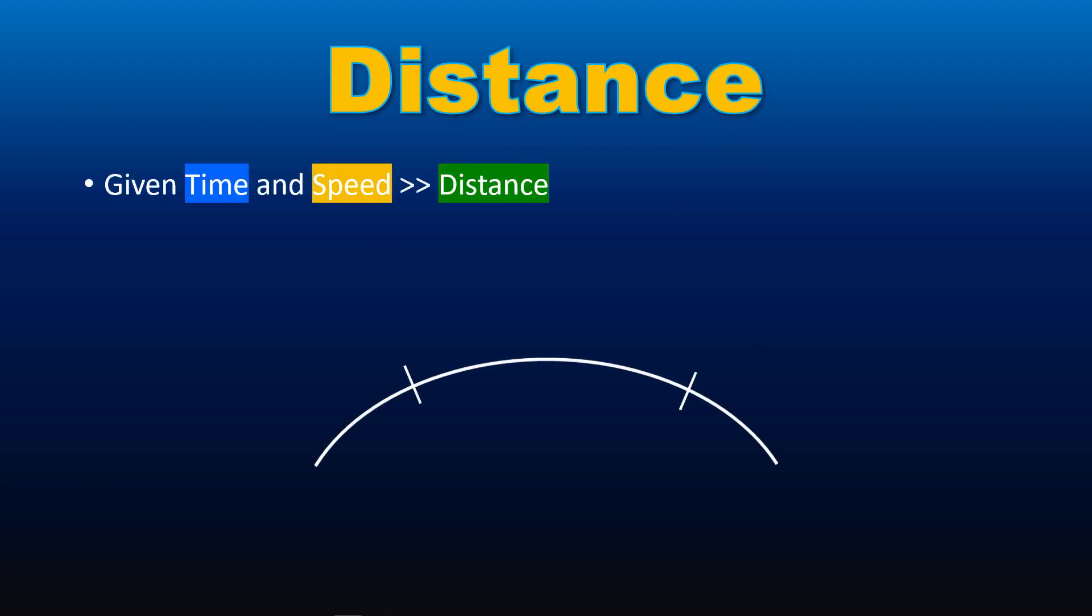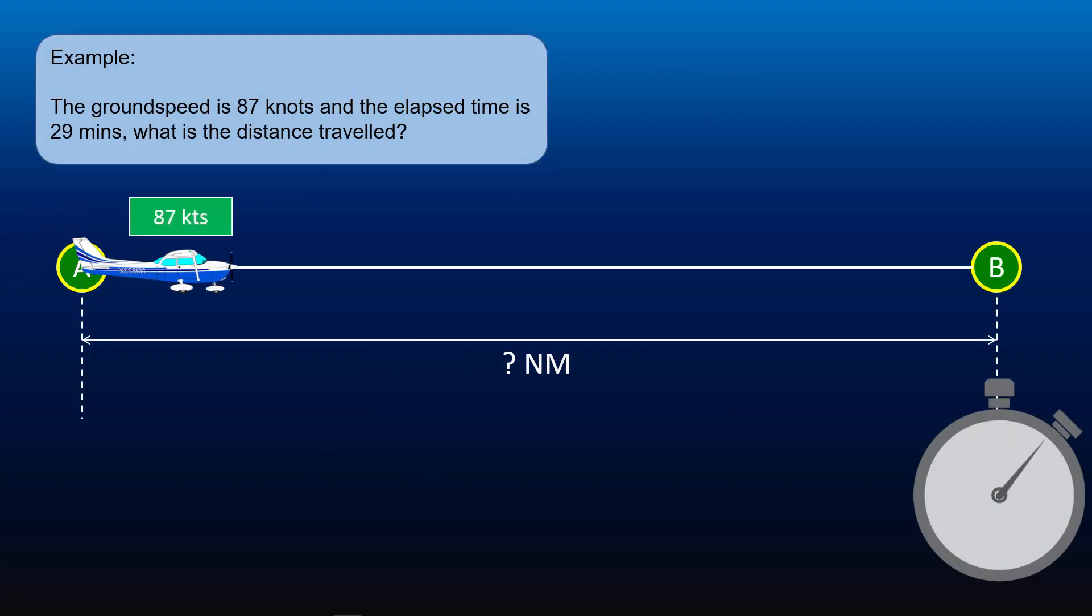If we were given elapsed time and speed, we can calculate the distance traveled. To find the distance traveled, set the speed on the outer scale against the 60 index on the inner scale. Then read off the distance traveled on the outer scale against the elapsed time on the inner scale. For example, the ground speed is 87 knots and the elapsed time is 29 minutes, what is the distance traveled?